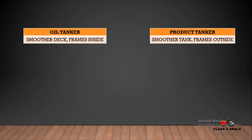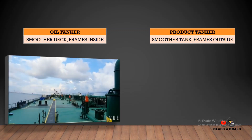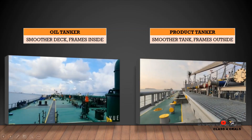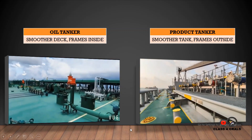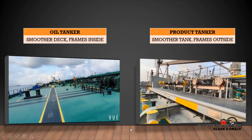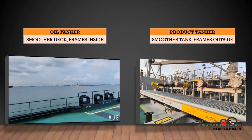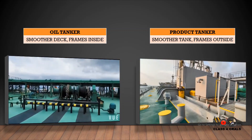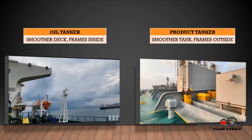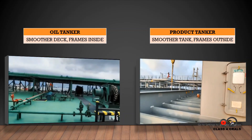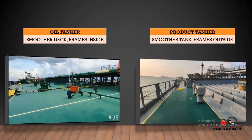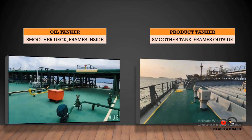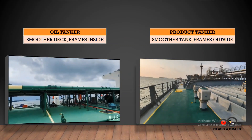As discussed, the crude oil tanker has smoother internal surfaces with frames inside, while the product tanker has frames outside. We can see this with the help of the video. These two videos explain how the oil tanker deck looks compared to the product tanker deck. You can clearly see the oil tanker is smoother whereas the product tanker has the frames. This is a major construction difference.